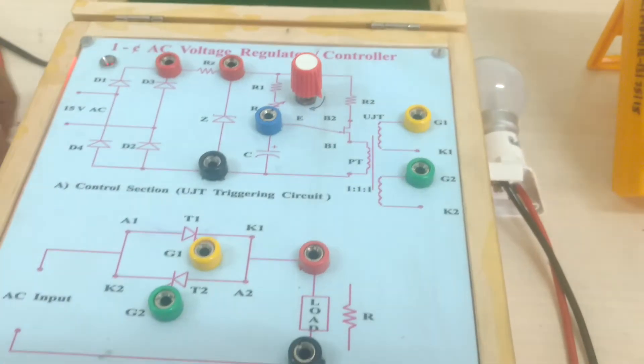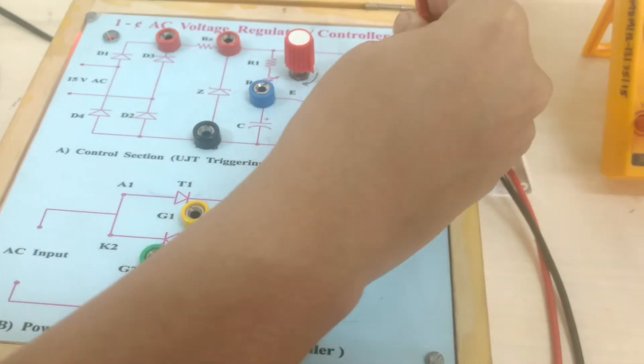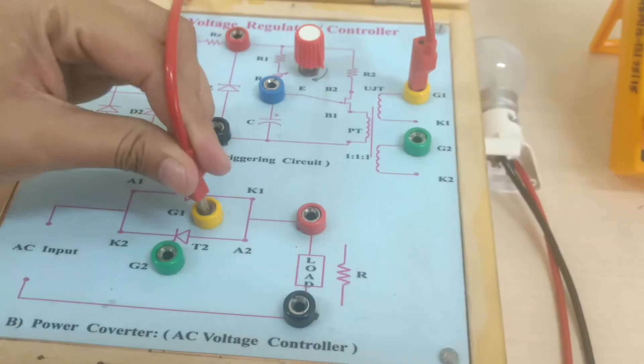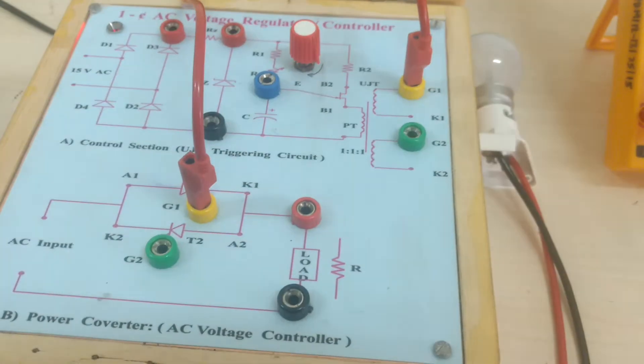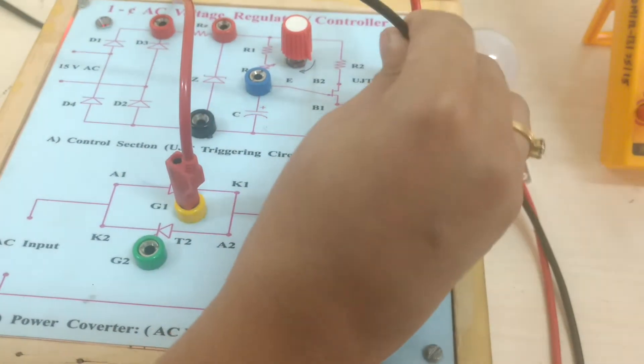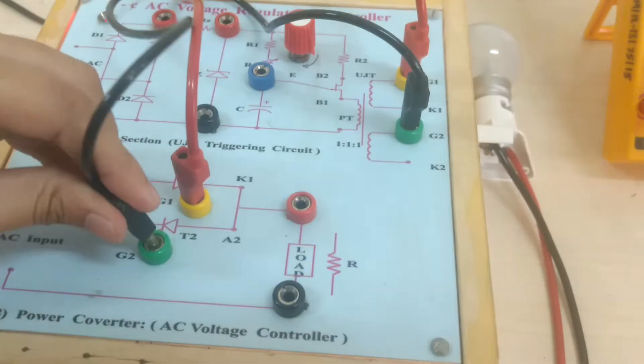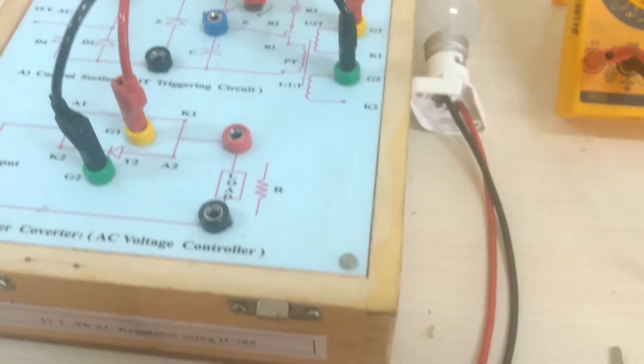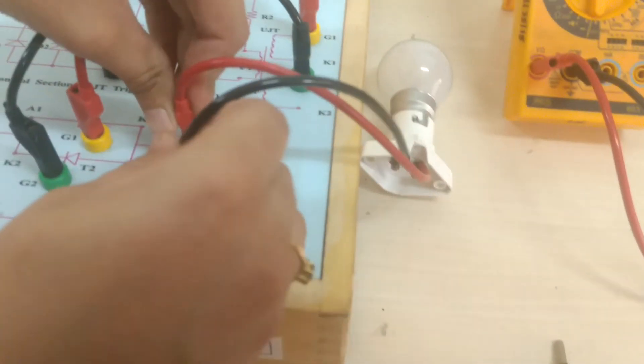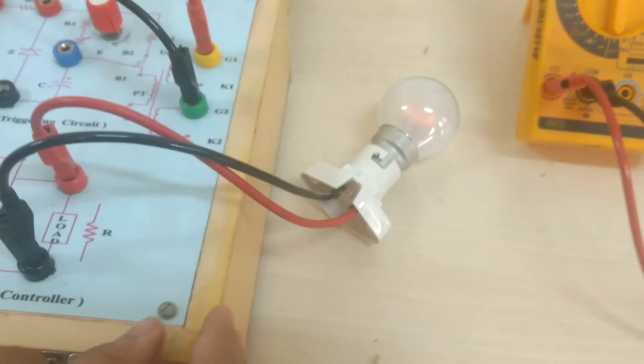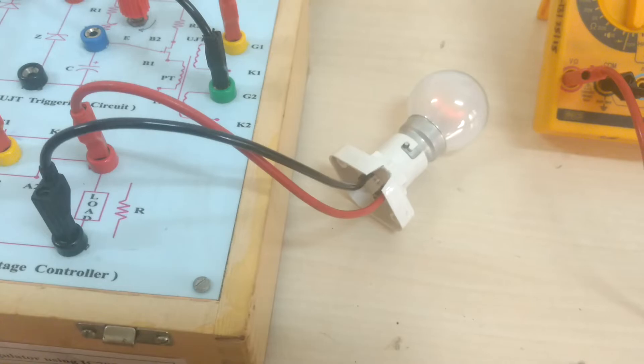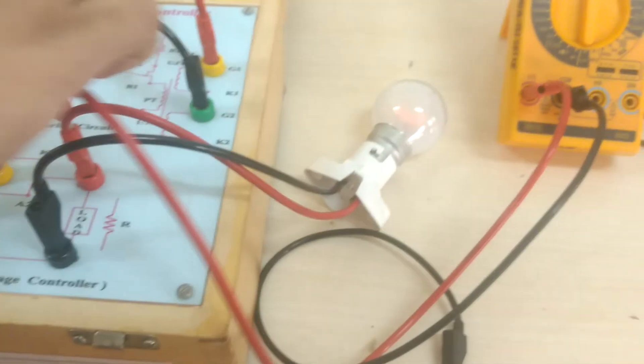So now we will see the connection. This G1 generated signal is given to the gate of T1, and G2 is given to the gate of T2. Across the load, I will connect the resistive load. To observe the output voltage, I will connect a multimeter across the load.